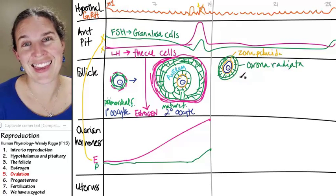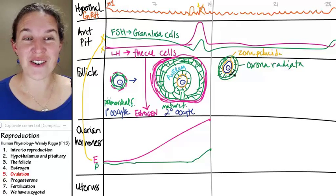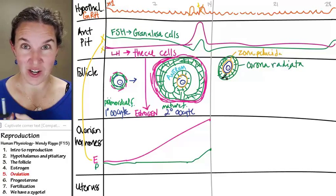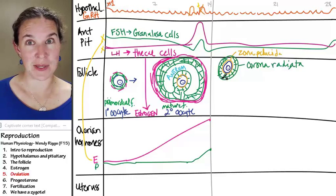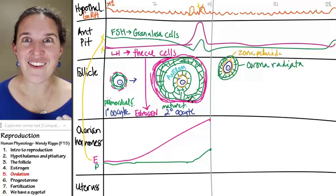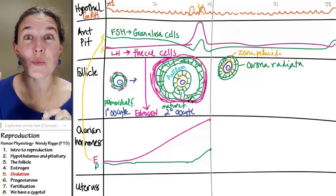It's like a blankie. It's like the secondary oocyte gets to bring its blankie along. Corona radiata is its blankie with zona pellucida as its jammies. And now it's in the fallopian tubes.